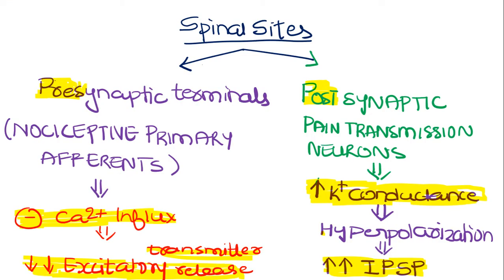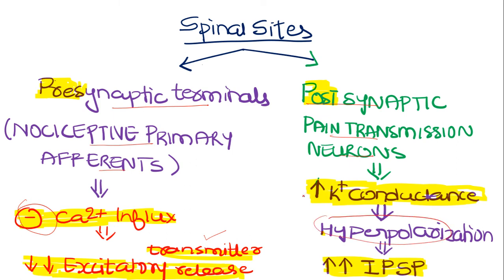Here is the chart showing both presynaptic and postsynaptic actions. The presynaptic nerve terminals act on nociceptive primary pain afferents and reduce excitatory transmitter release by inhibiting calcium influx. On the postsynaptic pain transmission neurons, they cause hyperpolarization by increasing potassium conductance, thereby enhancing the inhibitory postsynaptic potential.